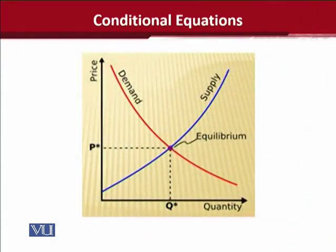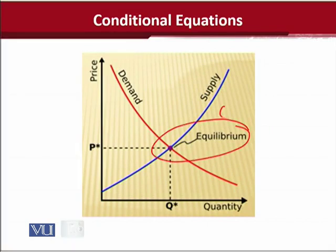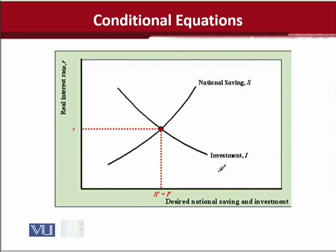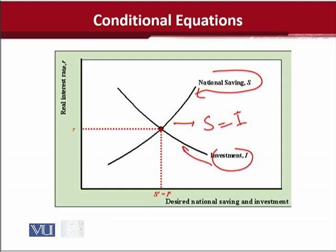As you can see in this slide, we have plotted the first condition, which is actually reflected at this point where Qd should be equal to Qs. So the conditional equation is being imposed at this point, which is the point of equilibrium. Another example of the conditional equation was the equality of savings and investment. You can see this is the saving curve and this is the investment curve plotted in the Cartesian coordinate. Their equality is achieved at this point, which is the point of equilibrium, and this depicts the conditional equation we were just talking about.